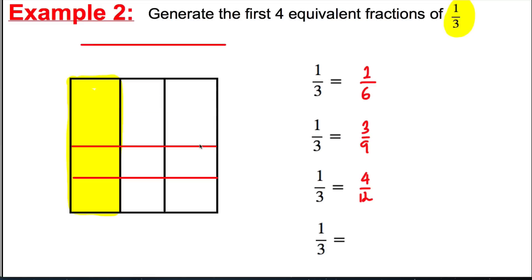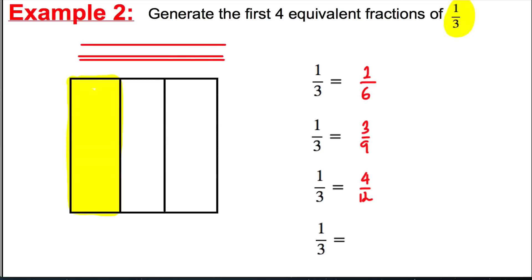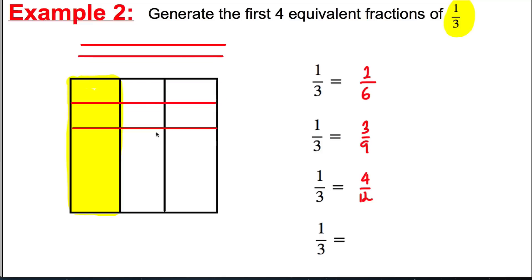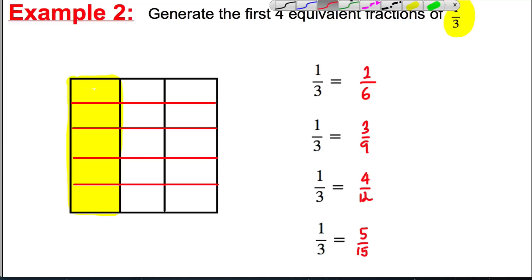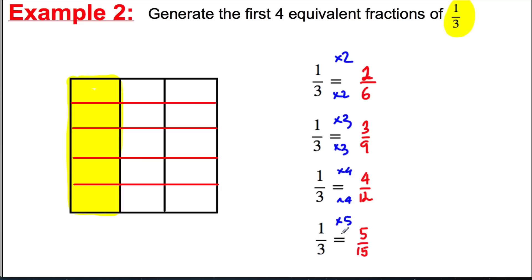For the last one, split it into five parts horizontally — one, two, three, four, five. And we've got five out of fifteen. You'll notice that we're multiplying the top and bottom by two, then by three, then by four, and in the last case by five.